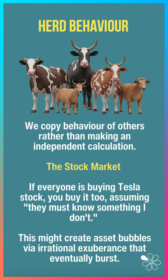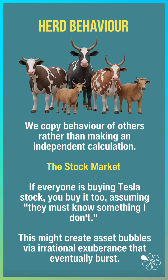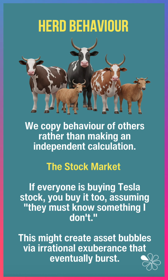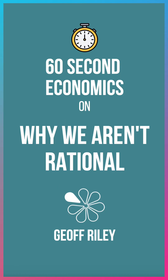And finally, herd behaviour. We often copy the behaviour of others rather than making an independent rational calculation. For example, in the stock market — everyone's buying Tesla shares, so you tend to buy them too, assuming they must know something you don't. And often, of course, this creates asset bubbles via irrational exuberance that eventually burst.